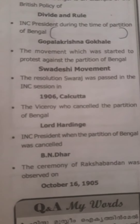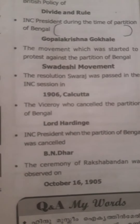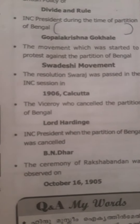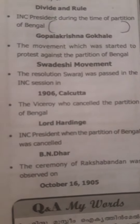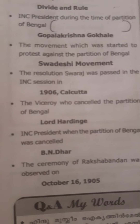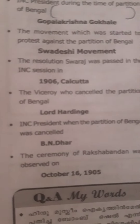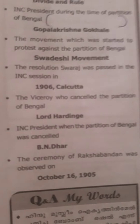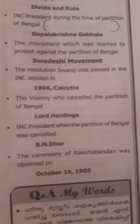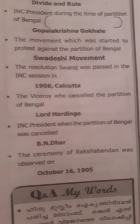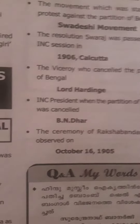The viceroy who cancelled the Partition of Bengal was Lord Hardinge. The INC President when the Partition of Bengal was cancelled was B.N.R. The ceremony of Raksha Bandhan was observed on October 16, 1905.